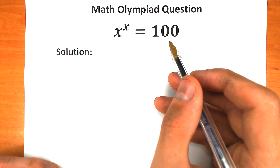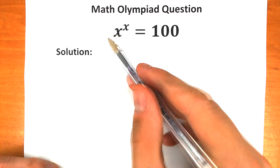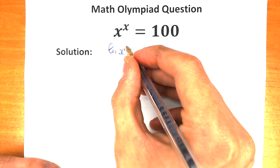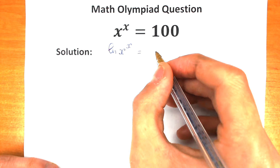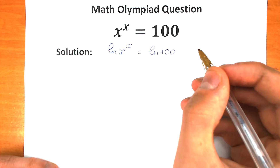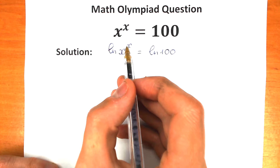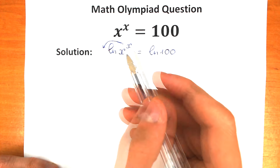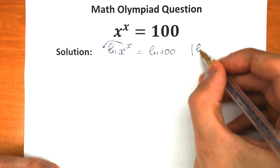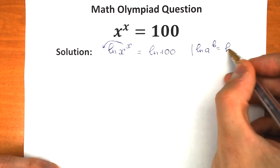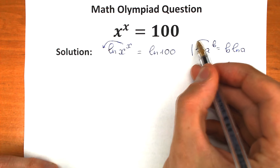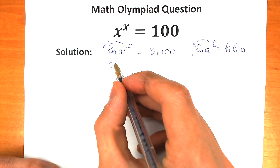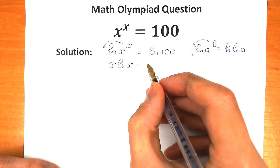First of all, let's apply natural log on both sides — on the left-hand side and on the right-hand side. So we have natural log of x to the power x on the left-hand side, equal to natural log of 100 on the right-hand side. Now it's a great moment to bring down this x using the most popular natural log property: natural log of a to the power b equals b times natural log of a. So we bring the x down, giving us x times natural log x, equal to natural log 100.